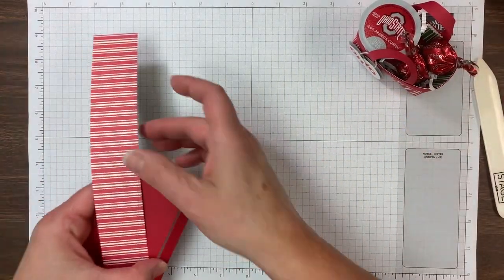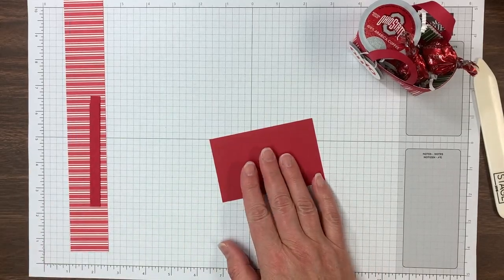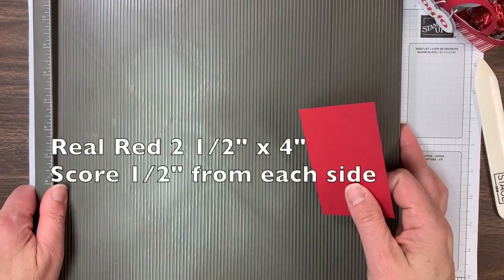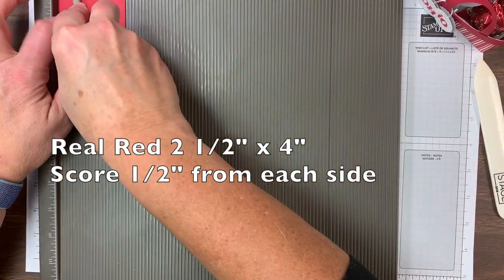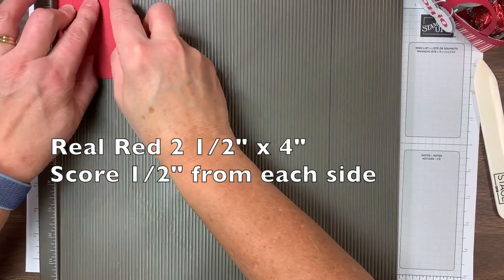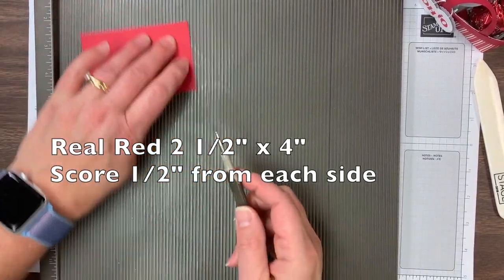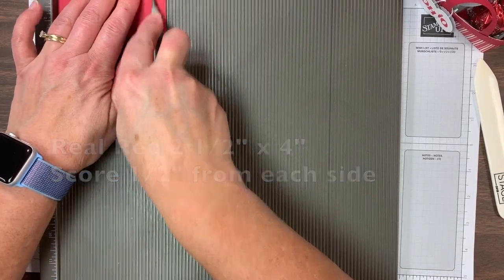All right, so it starts from a base. I'm using real red and it measures two and a half by four and it needs to be scored one half inch from each edge. Okay, so I'm going to do that real quick. So I'm scoring it a half and two and then turning and scoring it a half and three and a half.